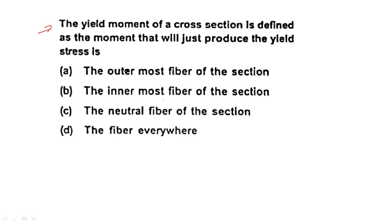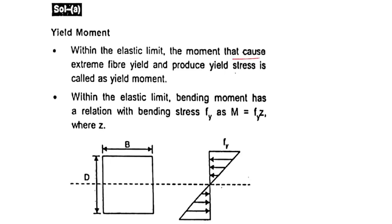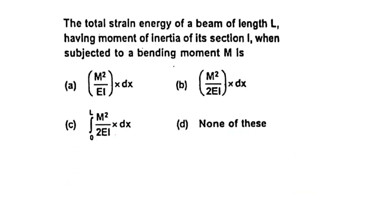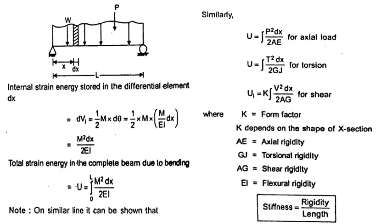Next question: The yield moment of a cross section is defined as the moment that will just produce yield stress at the outermost fiber. Within the elastic limit, bending moment and bending stress are related by MY = σY × S. Remember this formula and the associated sketch.